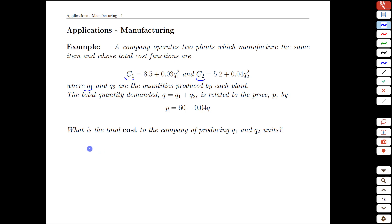Let's start with the total cost. The total cost is going to be the cost of running plant one simply added to the cost of running plant 2, and that will be 8.5 plus 0.03 q1 squared from here plus the 5.2 plus 0.04 q2 squared. At this point it makes sense to merge those together. We'll end up with 13.7 plus an element that depends on q1 and a second element that depends on q2, and that will be the total cost.